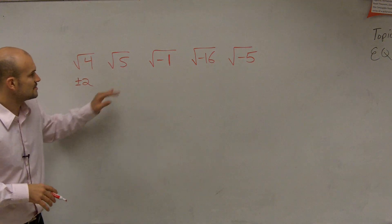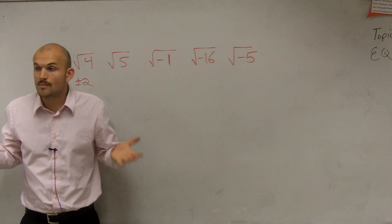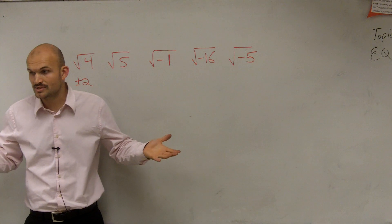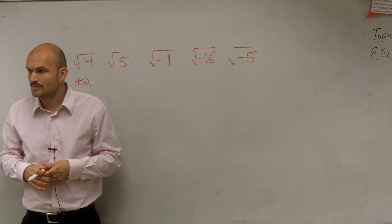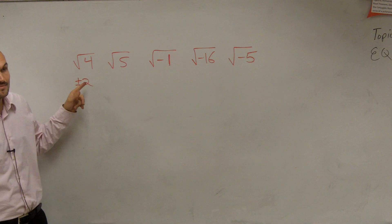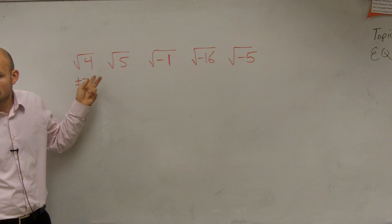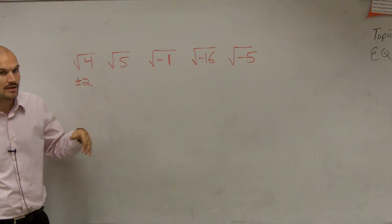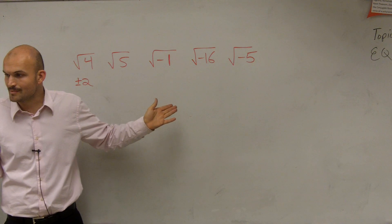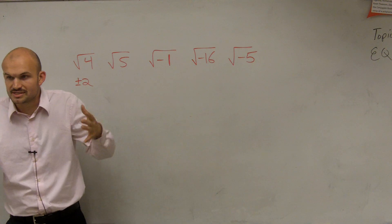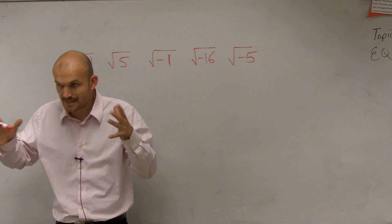Now we're going to talk about the square root of negative one. For all negative numbers, you cannot take the square root of a negative number. Think about it: a positive times a positive gives you a positive, and a negative times a negative gives you a positive. If you do a positive times a negative, you get a negative, but then they're not the same number. So it's impossible to take the square root of a negative number.